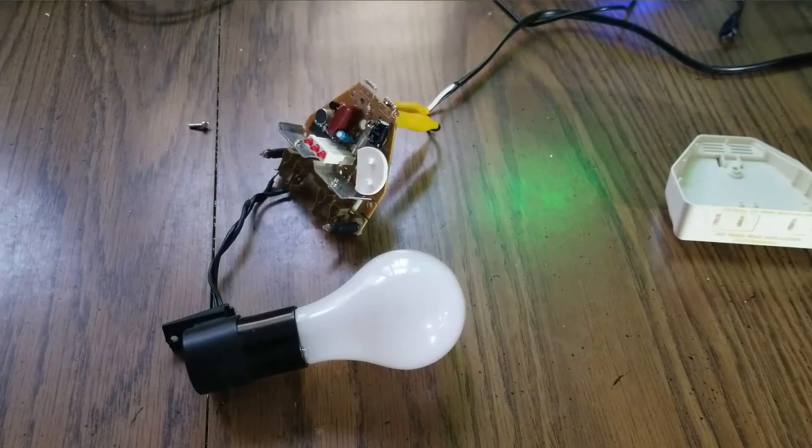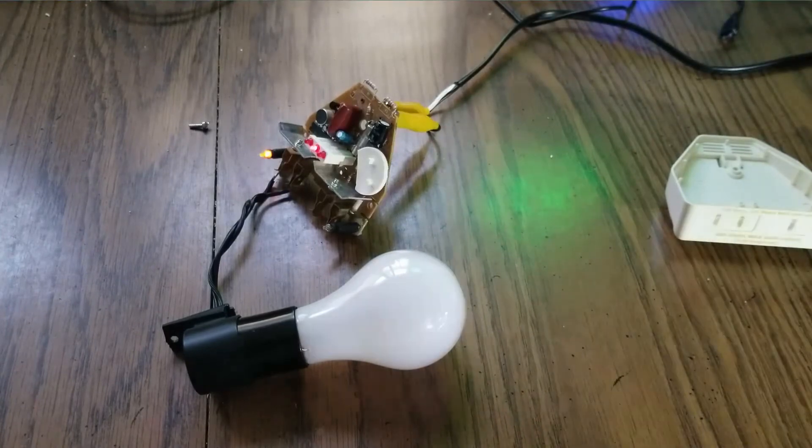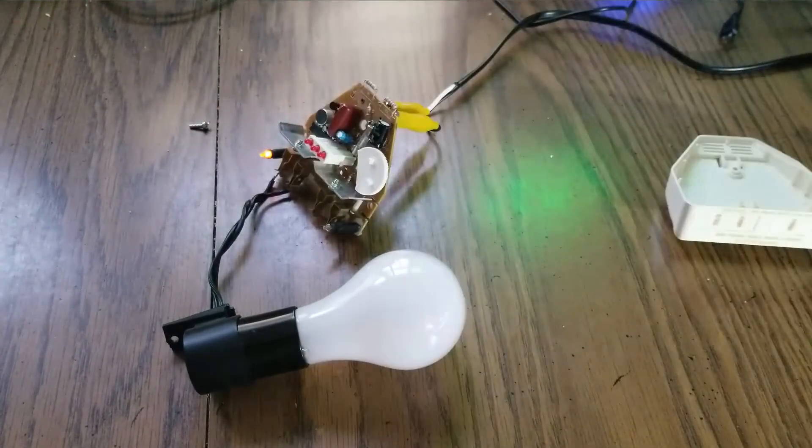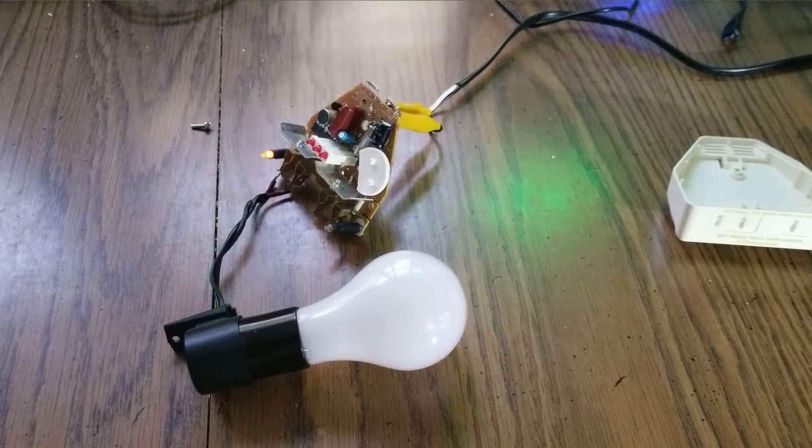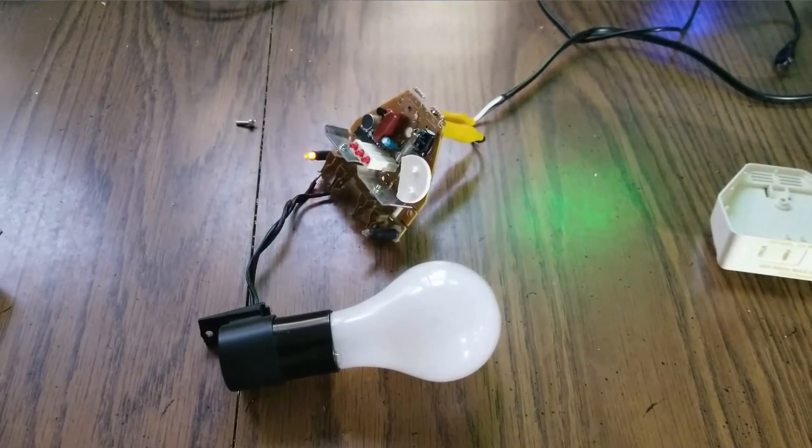Okay, now we have the bulb plugged into the two-clap. Let's turn it on. We can see the neon bulb on this side lights. So, it is just an indicator that there's a lamp plugged in. I thought it would indicate if the lamp was on or not. Let's clap twice.